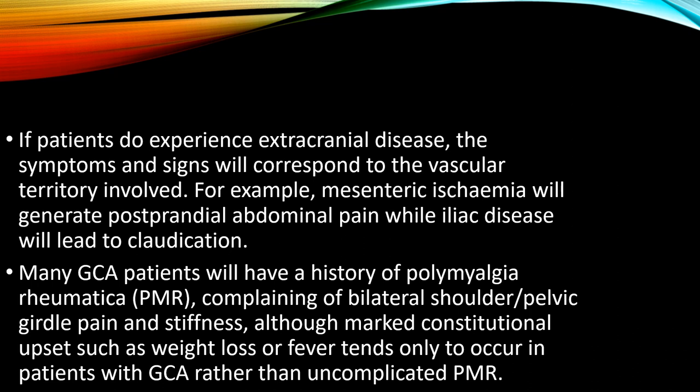If patients experience extracranial disease, the symptoms and signs will correspond to the vascular territory involved. For example, mesenteric ischemia will generate post-prandial abdominal pain, while iliac disease will lead to claudication. Many GCA patients will have a history of polymyalgia rheumatica, comprising bilateral shoulder and pelvic girdle pain and stiffness, although marked constitutional symptoms such as weight loss or fever tend only to occur in patients with GCA rather than those with polymyalgia rheumatica alone. So to differentiate between polymyalgia rheumatica alone versus with GCA, search for the constitutional symptoms.